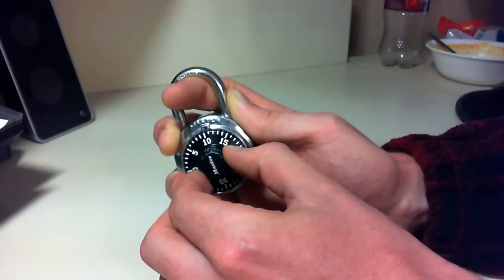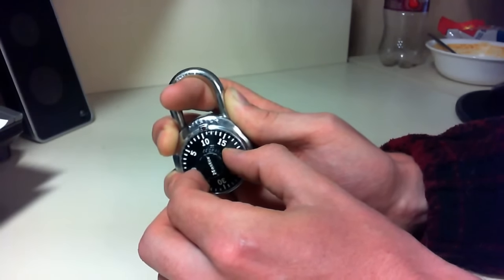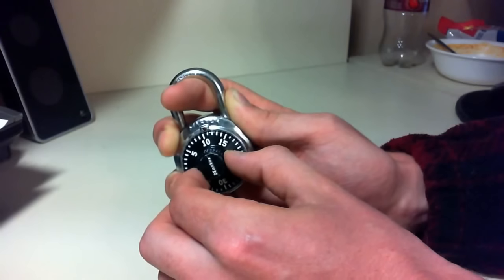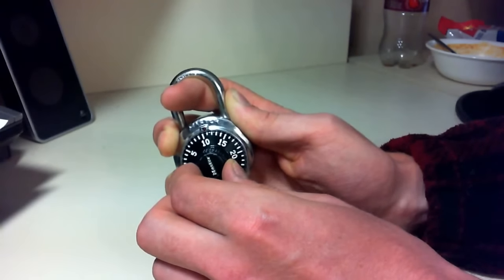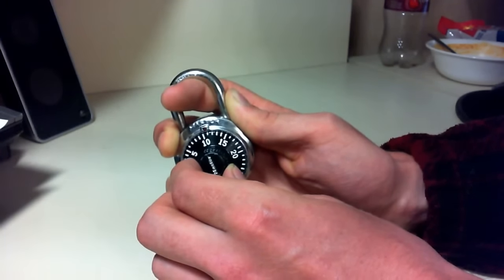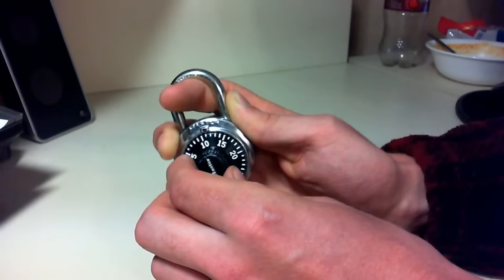So you're going to write that number down, eleven, and you're going to add five to that first number. So that will give us sixteen. And that means that sixteen is our first number in the combination of this master lock.